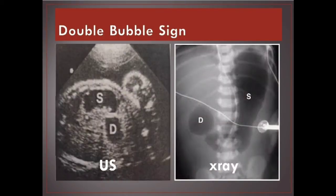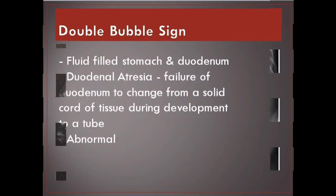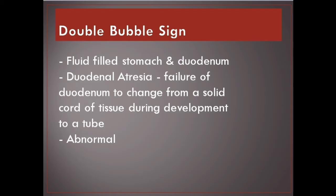Double bubble sign. Fluid-filled stomach and duodenum — duodenal atresia. Failure of the duodenum to change from a solid cord of tissue during development to a tube. Abnormal.